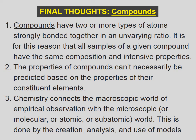Final thoughts on compounds. One: compounds have two or more types of atoms strongly bonded together in an unvarying ratio — it is for this reason that all samples of a given compound have the same composition and intensive properties. Two: the properties of compounds can't necessarily be predicted based on the properties of their constituent elements. Three: chemistry connects the macroscopic world of empirical observation with the microscopic, molecular, atomic, or subatomic world, done through the creation, analysis, and use of models.